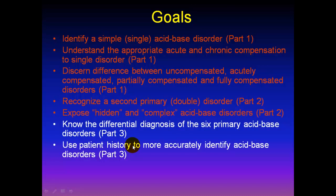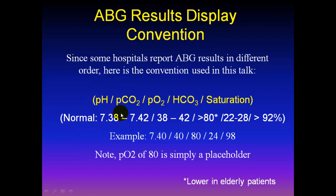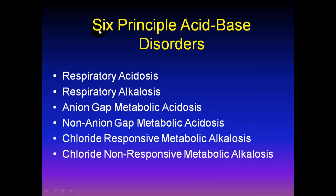In the first two talks, we discussed single acid-base disorders, compensation, second disorders, hidden and complex disorders. In this final talk, we'll discuss the differential diagnosis of the six primary acid-base disorders, and we'll learn how to incorporate some patient history to more accurately identify acid-base disorders. As usual, we will avoid formulas. There are really six principal acid-base disorders: two respiratory disorders and four metabolic disorders.